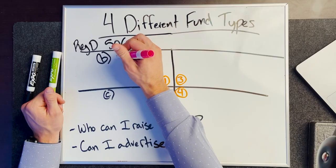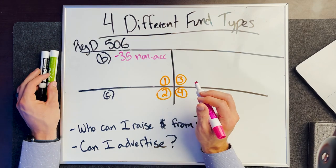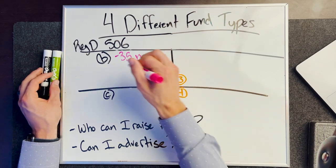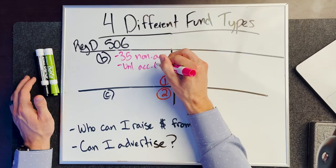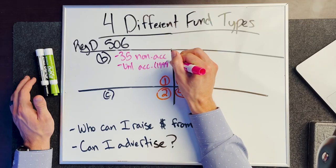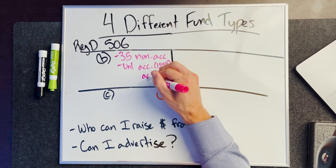So 506B — who can I raise money from? Inside of a 506B, you can raise money from 35 non-accredited and unlimited accredited investors. However, there are subsections that limit you: at the most, you can raise from 1,999 investors under a 3C1 exemption, or you're limited to 99 accredited investors.